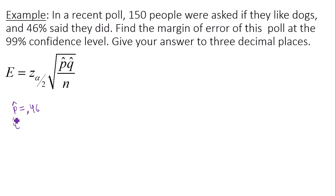p hat is 0.46. q hat is 1 minus p hat, 1 minus the sample proportion, 1 minus 0.46, which is 0.54. And then n is my sample size. In this case, my sample size is 150.